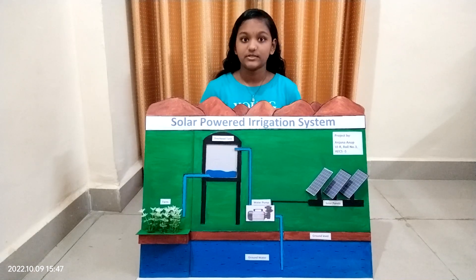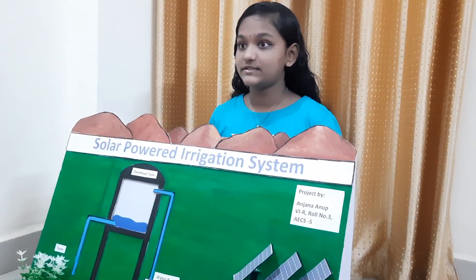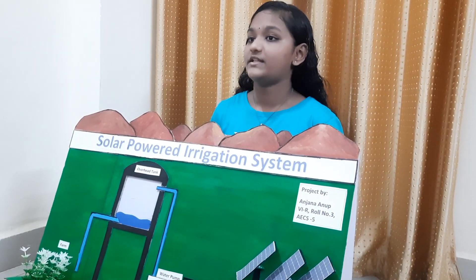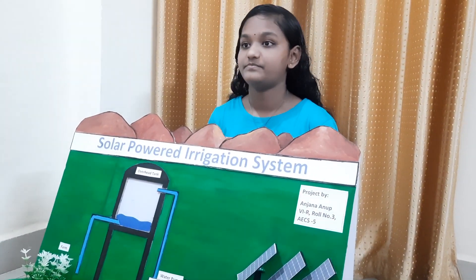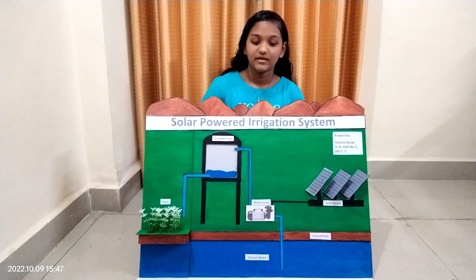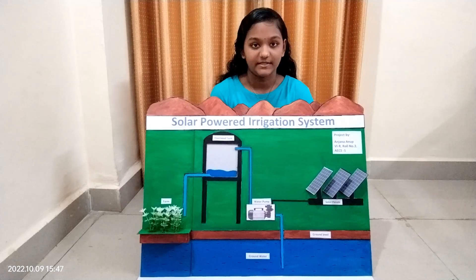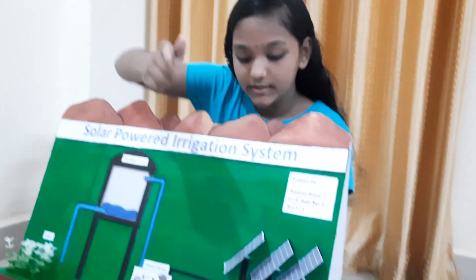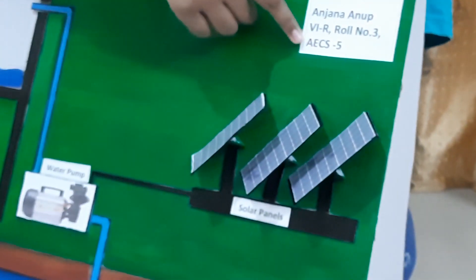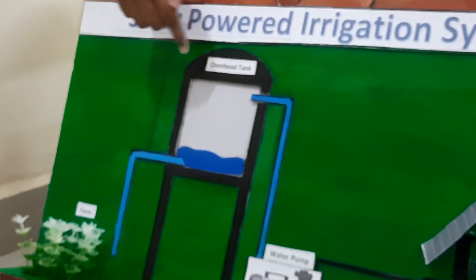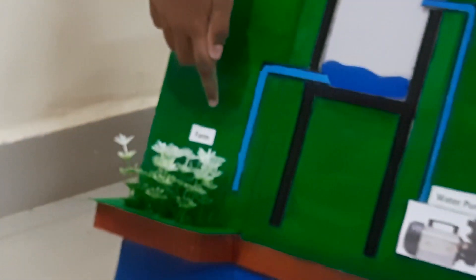For rural areas where electricity is not accessible, we can use solar energy. First I will introduce the parts. This is the solar panel, this is the water pump, this is an overhead tank, and this is the field.